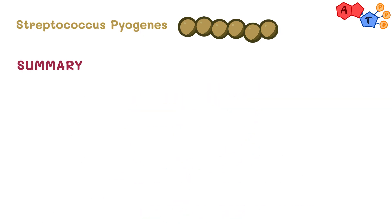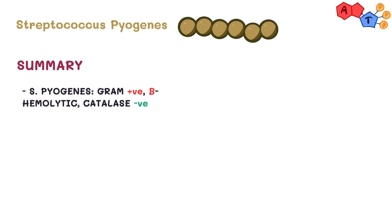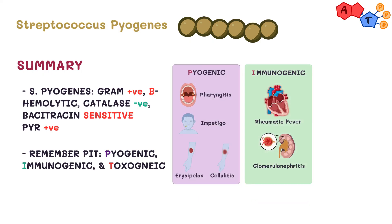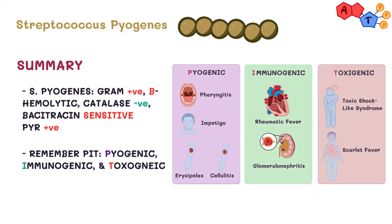Now let's sum it up. Streptococcus pyogenes is a gram-positive, beta-hemolytic, catalase-negative organism; it's bacitracin-sensitive and PYR-positive. It can cause diseases by three main mechanisms — pyogenic, immunogenic, and toxigenic. Pyogenic: infections of the skin and mucous membranes. Immunogenic: rheumatic fever and glomerulonephritis. Toxigenic: toxic shock-like syndrome and scarlet fever. And lastly, keep your pen ready to write penicillin as the treatment of choice for Streptococcus pyogenes.